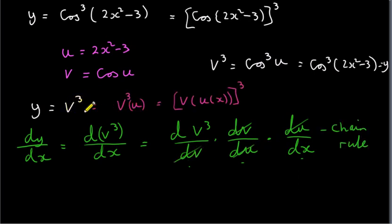We can actually write v cubed in the following form. So v is a function of u. v equals cos of u. So v cubed is v of u all to the power of 3. But then we know that u is a function of x. So we can write u like this to indicate that u is a function of x. We just put x in brackets after it. So we're differentiating this.